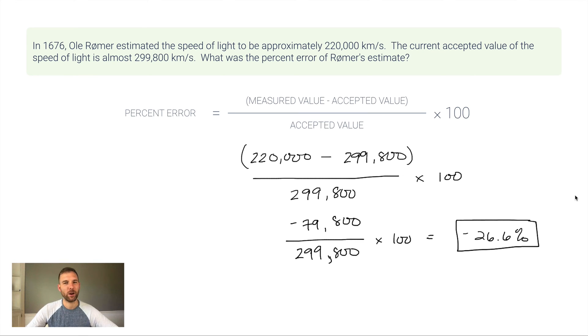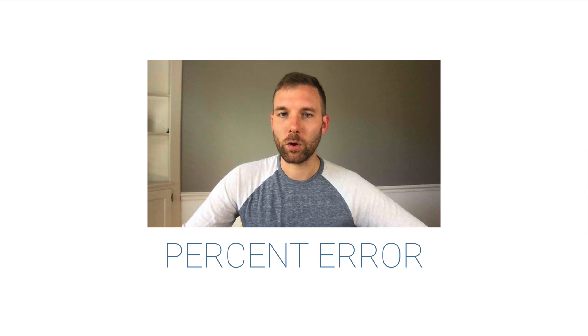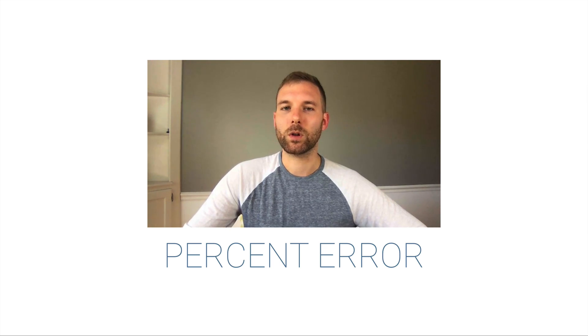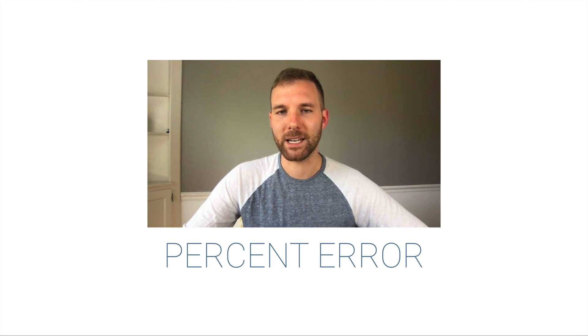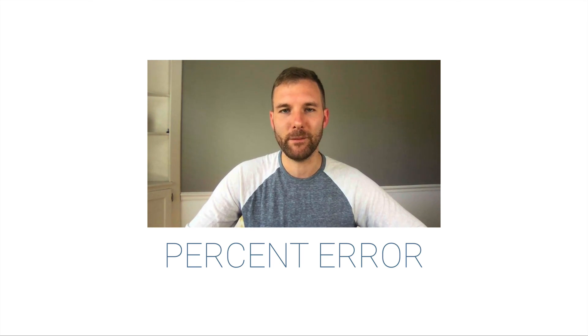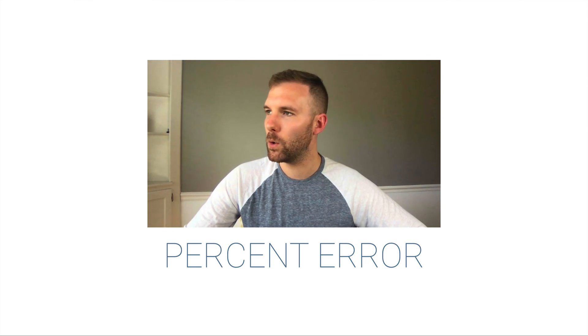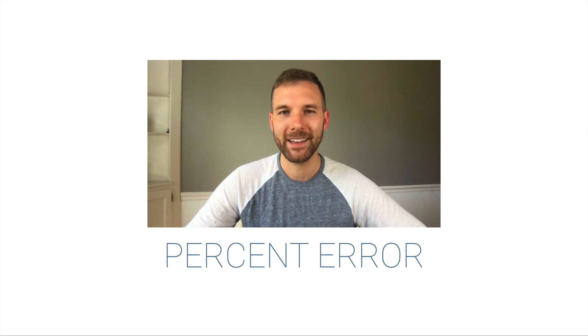It wasn't because this percent error is negative—it was because 26.6 is much farther from zero than 3 is. So percent error is useful to express how close or far away we are to an accepted value. It's possible to be positive or negative depending on whether you're above or below the accepted value. It's no better or worse to be negative—the goal is to be as close to zero percent as possible. Thank you.